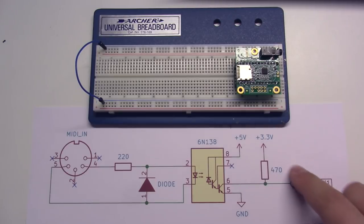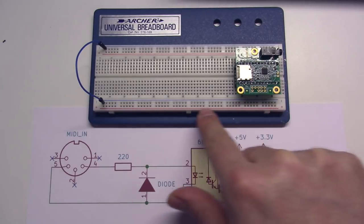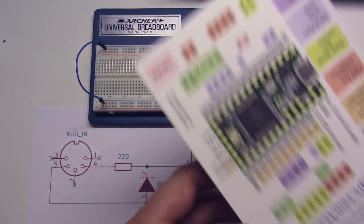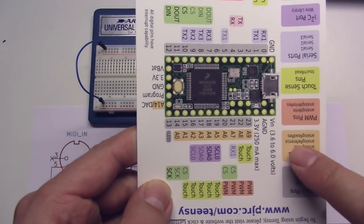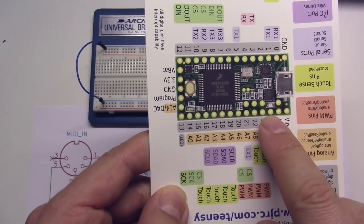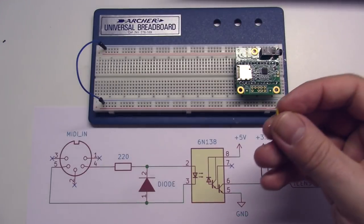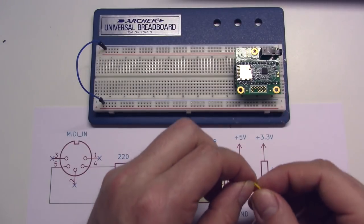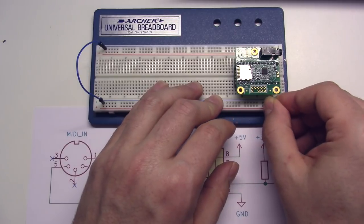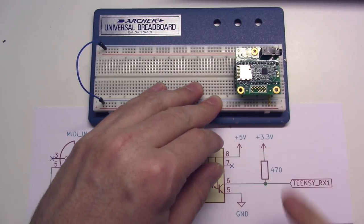Now let's run 3.3 volts to the red line on the bottom here. Like we said, on our Teensy board, the 3.3-volt out is this pin right here, so the third from the bottom edge. So I'll take another jumper wire and run that. Alright, there it is.